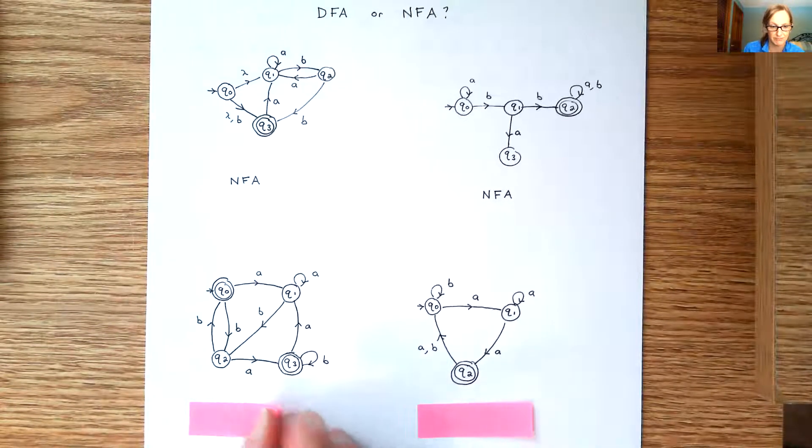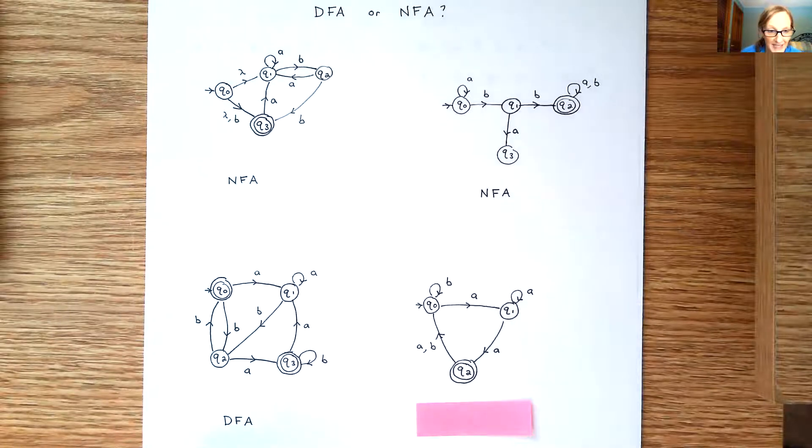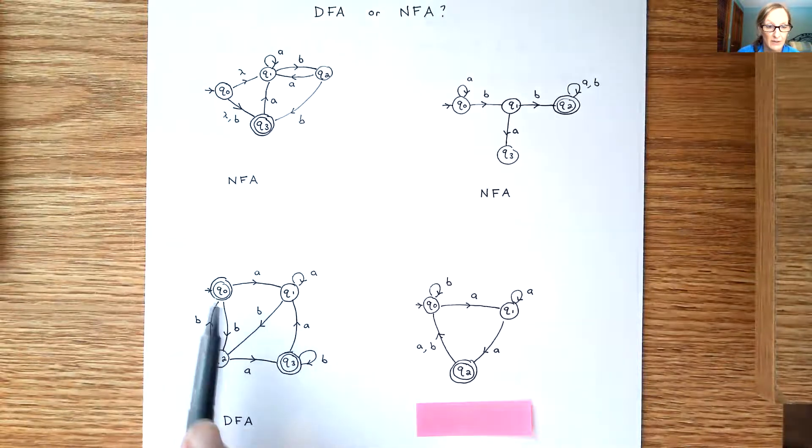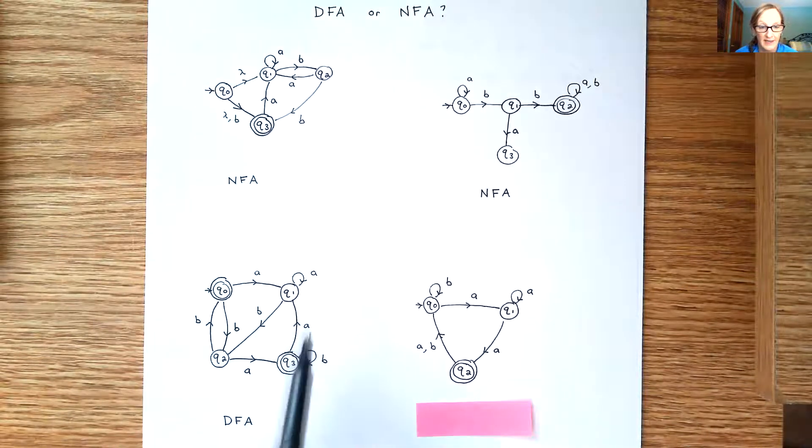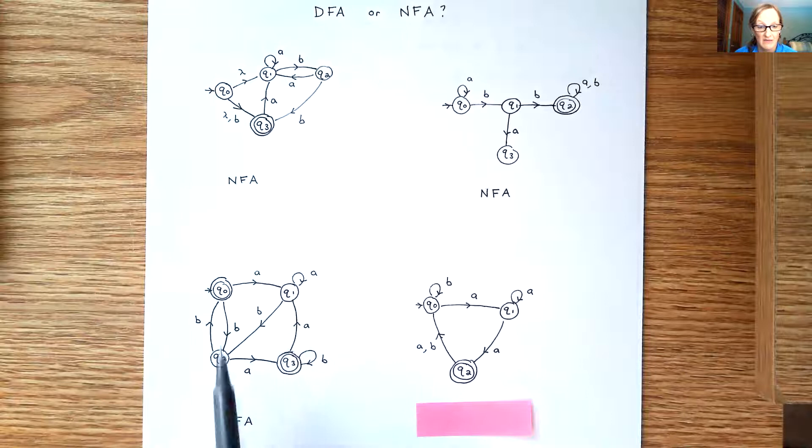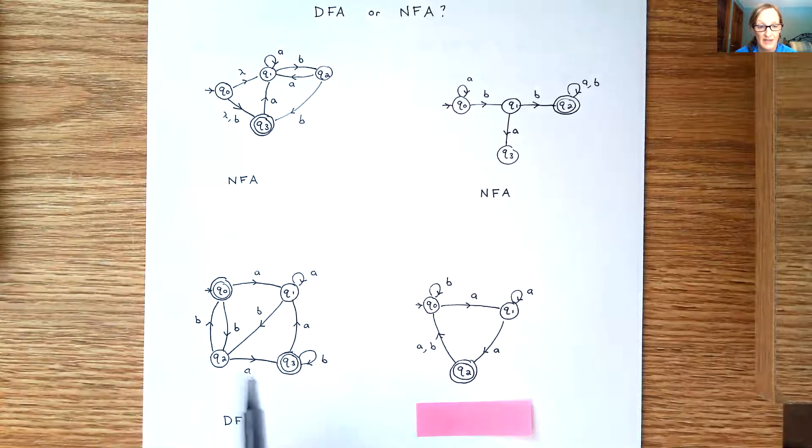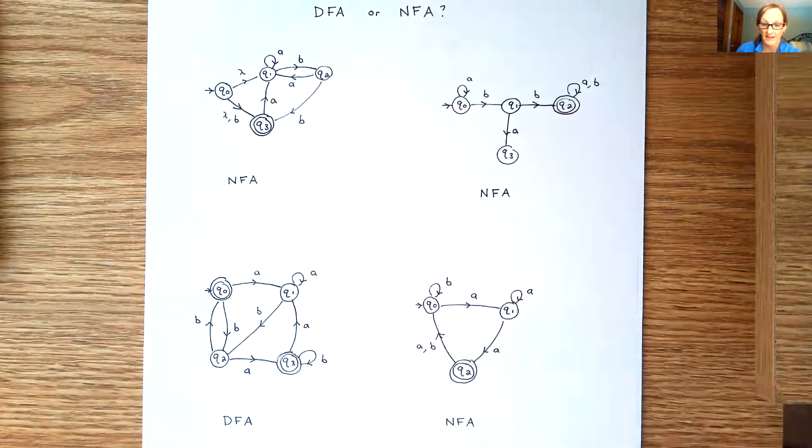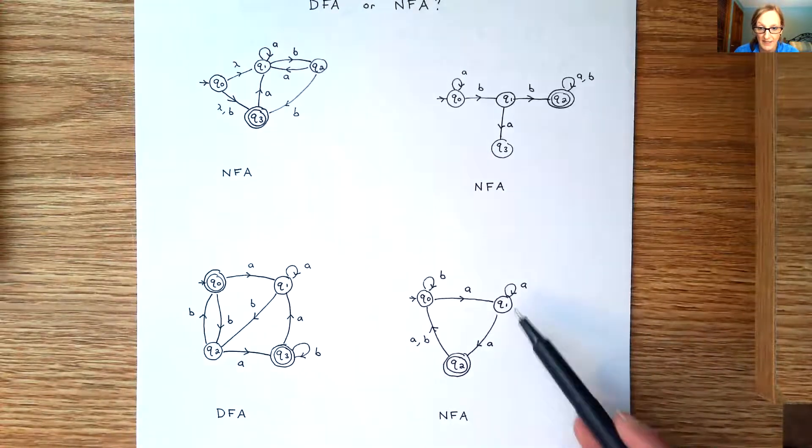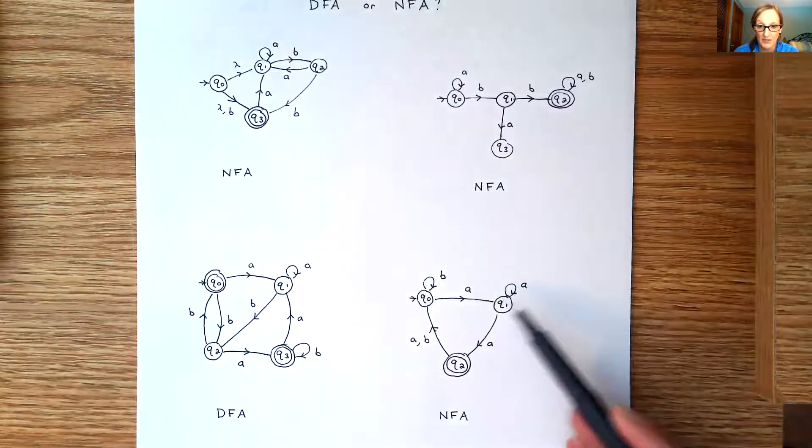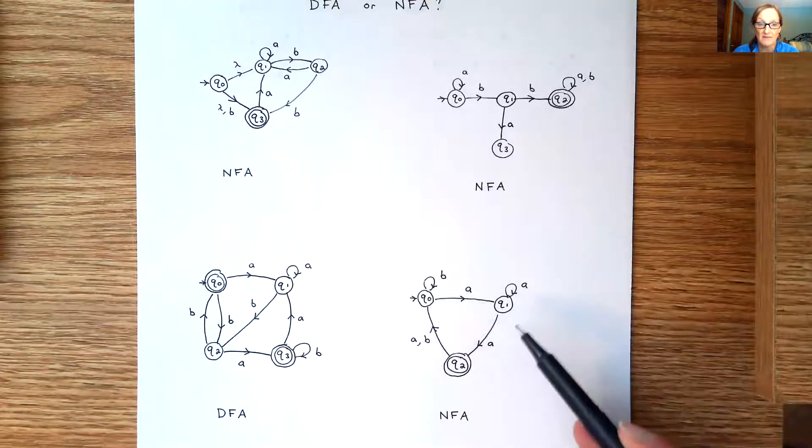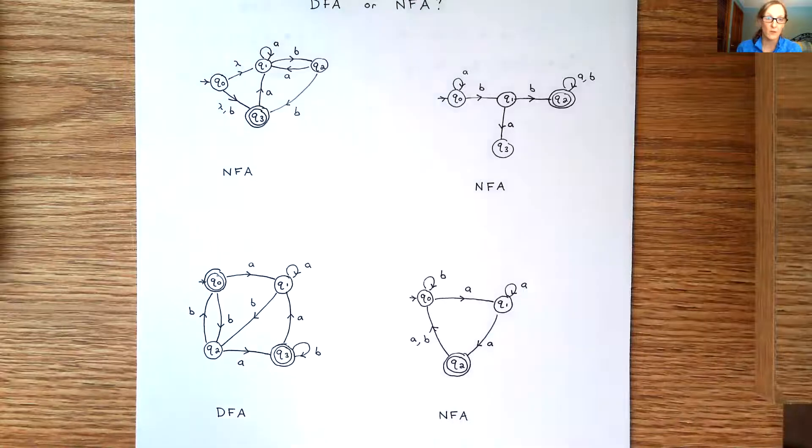Next one, number three. This one is a DFA. If you take a look at each state there is one and only one transition on an A and a B. And then finally the last one is an NFA. This one is an NFA because Q1 has multiple transitions on an A but there's no transition on a B.